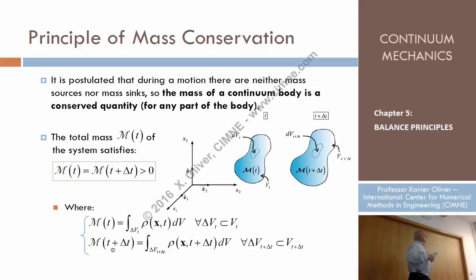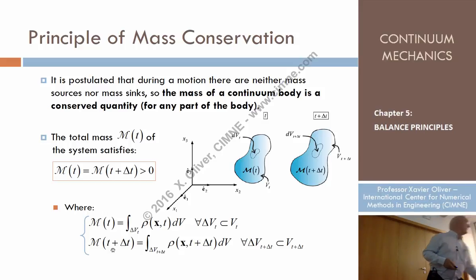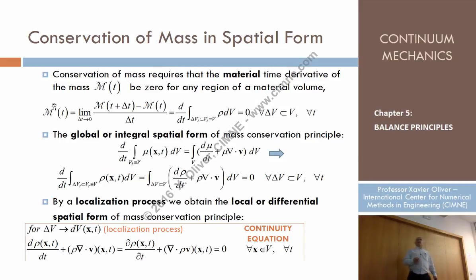Now let's see how this translates into equations. That's a conceptual postulate, and let's see how with our baggage we are able to translate that into equations. If the mass is constant along time, that means the derivative of the mass of the continuum medium, of the material volume — the derivative of this mass understood as the contents of mass at t plus delta t minus t, divided by delta t, when delta t tends to zero — is equal to zero.